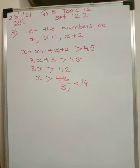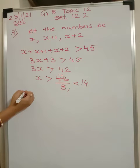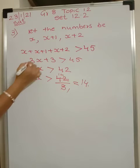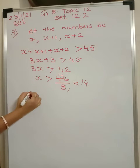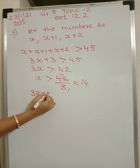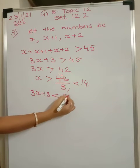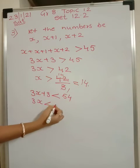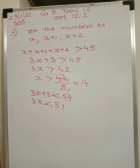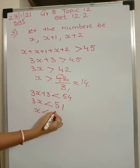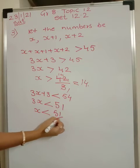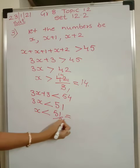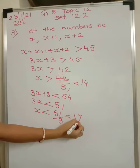And it is less than 54. So 3x plus 3 will be less than 54, meaning 3x will be less than 51 — since 3 transferred gives 54 minus 3 equals 51. So x is less than 51 divided by 3, which comes out to be 17.